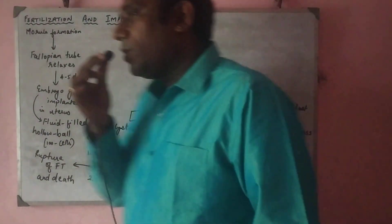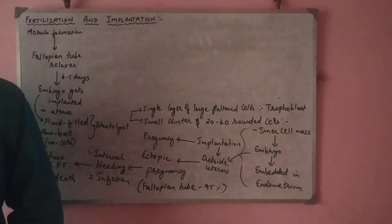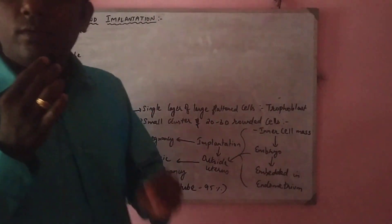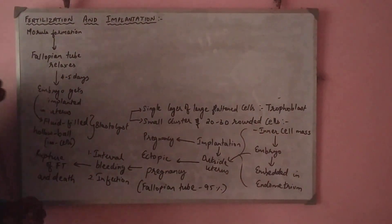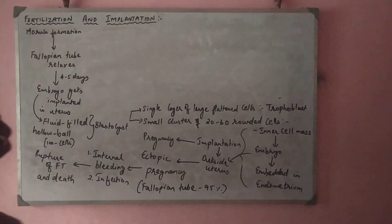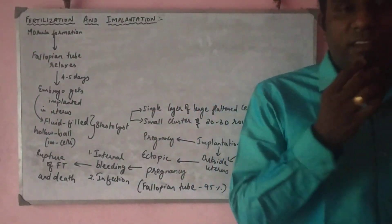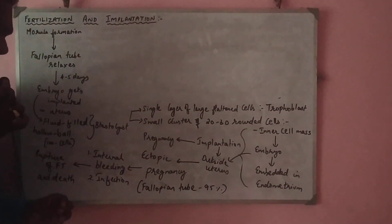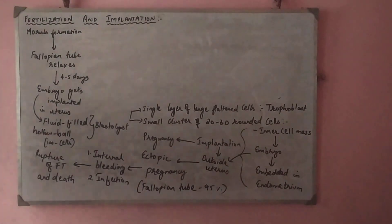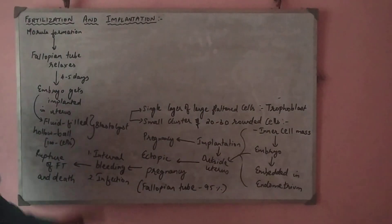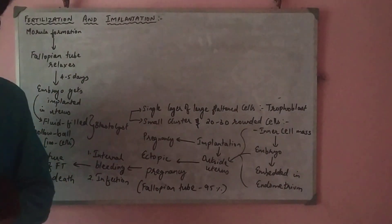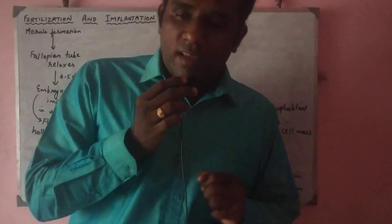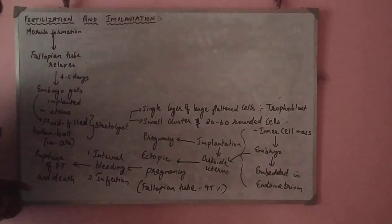In the previous video we saw how the process of syngamy happens — that is the process of fertilization, how the male gamete fuses with the female gamete. Once this process of fertilization is over, the zygote starts to develop and it reaches a 16-cell stage which is also called the morula. This morula will be in the shape of a small berry, and this happens in the fallopian tube.